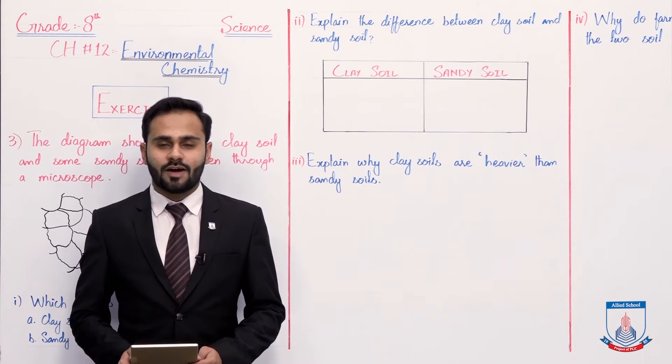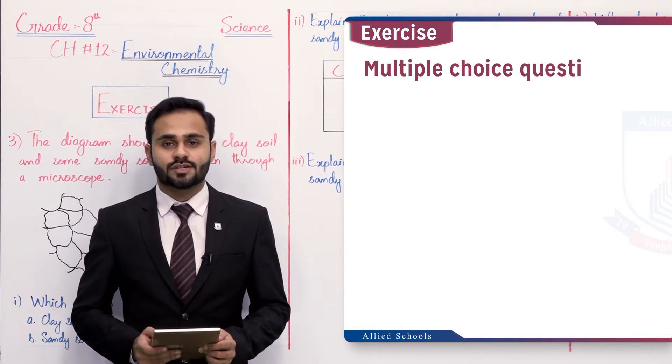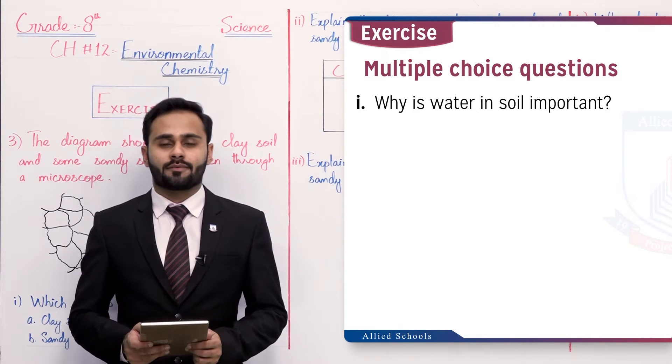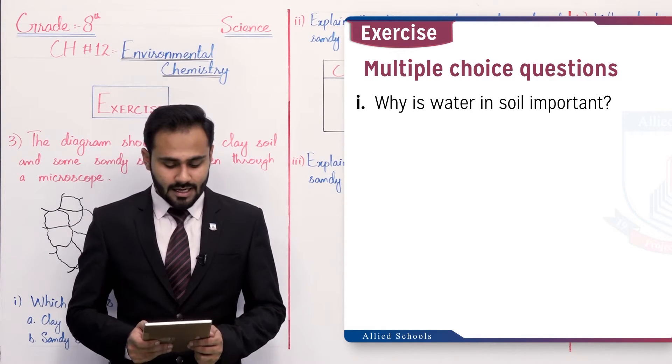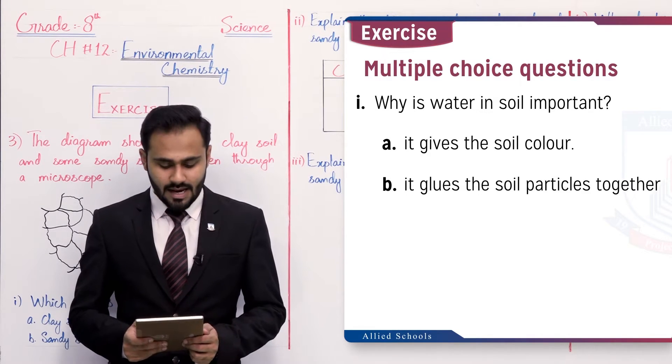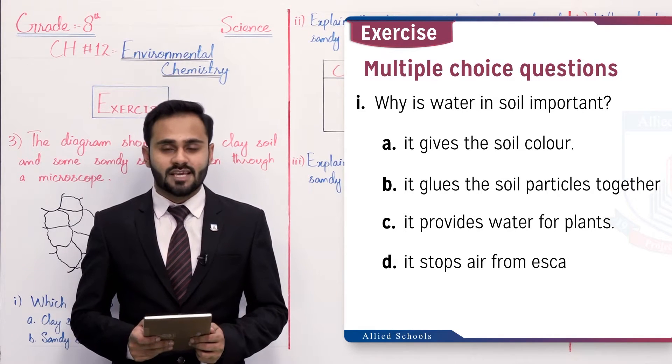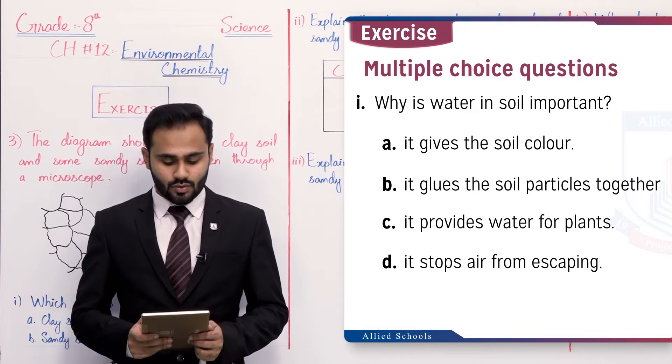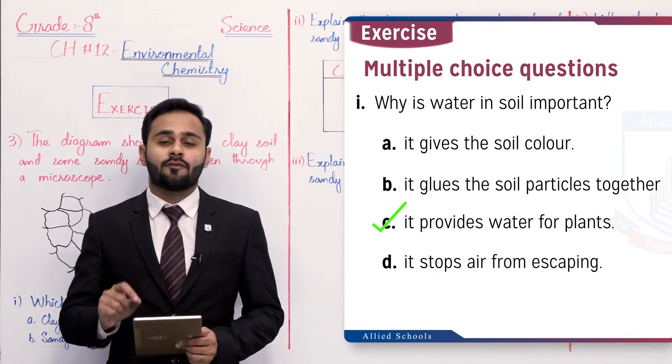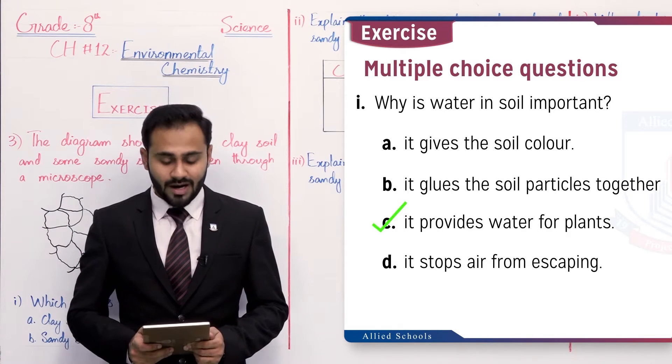Chapter number 12, Environmental Chemistry and the exercise. Question number one, multiple choice question. The first MCQ is why is water in soil important? A: it gives the soil color, B: it glues the soil particles together, C: it provides water for plants, and D: it stops air from escaping. The option C is correct that it provides water for plants. Soil mein jo water hota hai, wo basically plants ko provide kar rahi hoti hai.